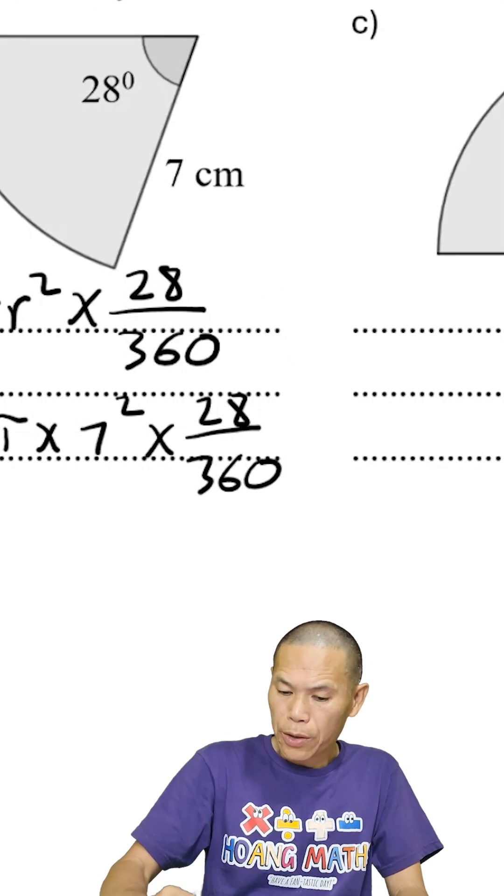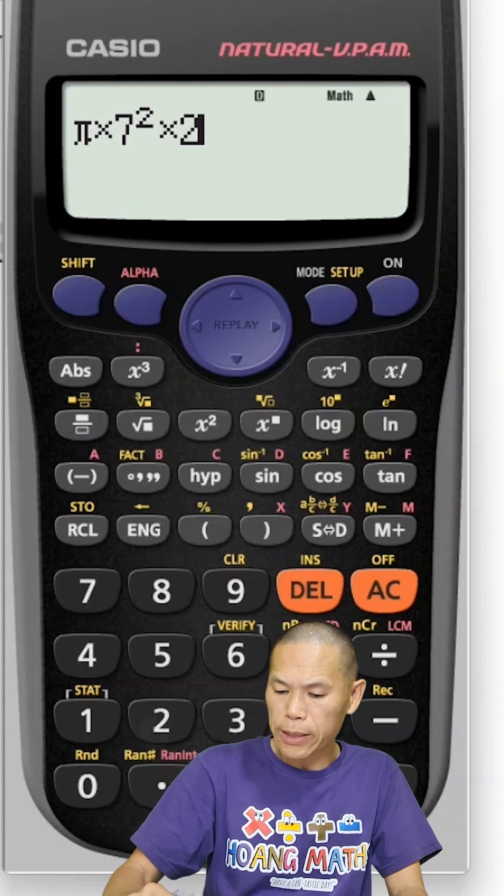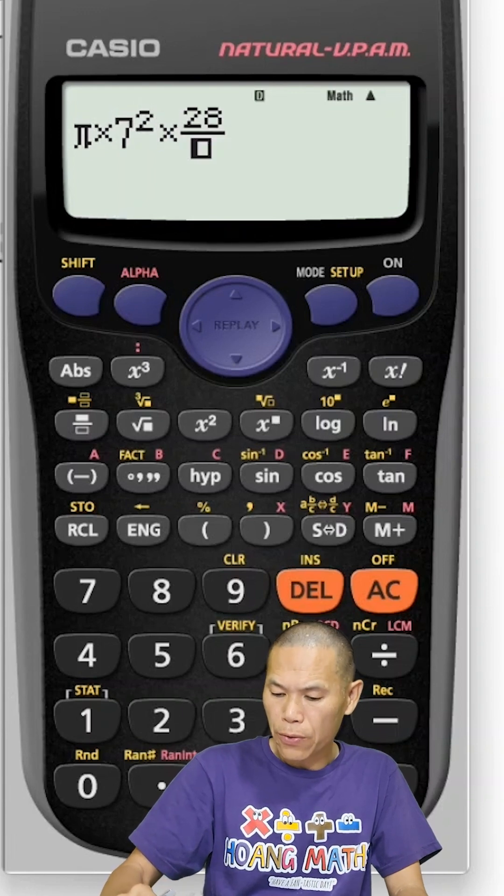That is shift pi times 7 squared, times 28 out of 360.